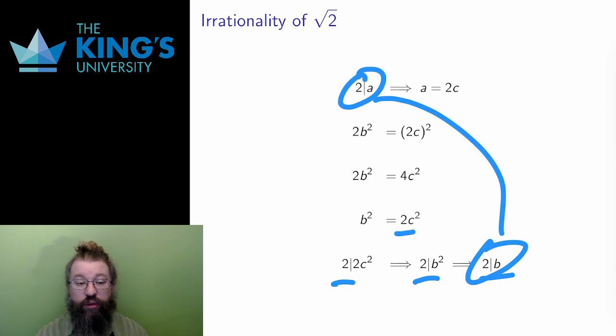Therefore, I conclude the original assumption was false, and I have proved that root 2 is irrational.